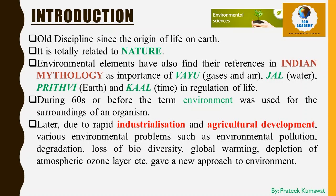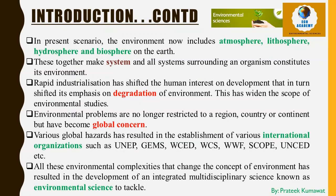Environmental degradation now includes acidification, desertification, deforestation, loss of biodiversity, global warming, and depletion of the atmospheric ozone layer, among many others. These problems have given a new approach to the environment. In the context of the present scenario, the dimension of the current environment has enlarged to include both physical and living factors. The environment now includes atmosphere, lithosphere, hydrosphere, and biosphere on earth — all together forming a system that constitutes the environment of an organism.